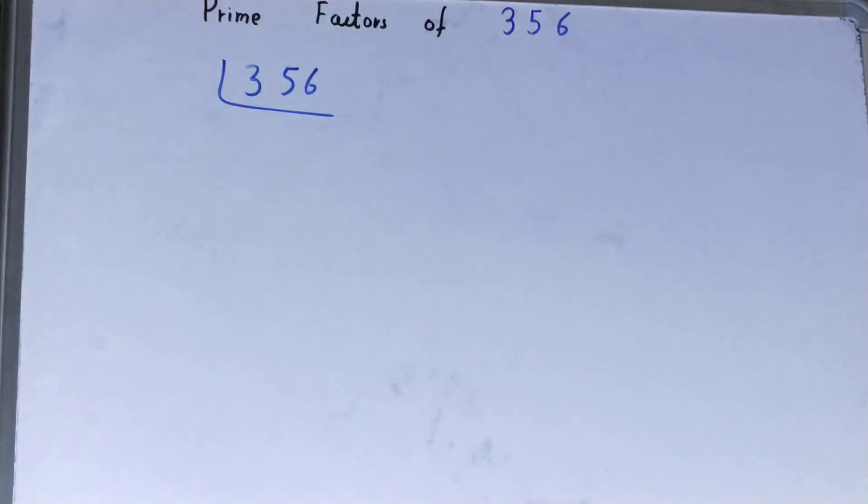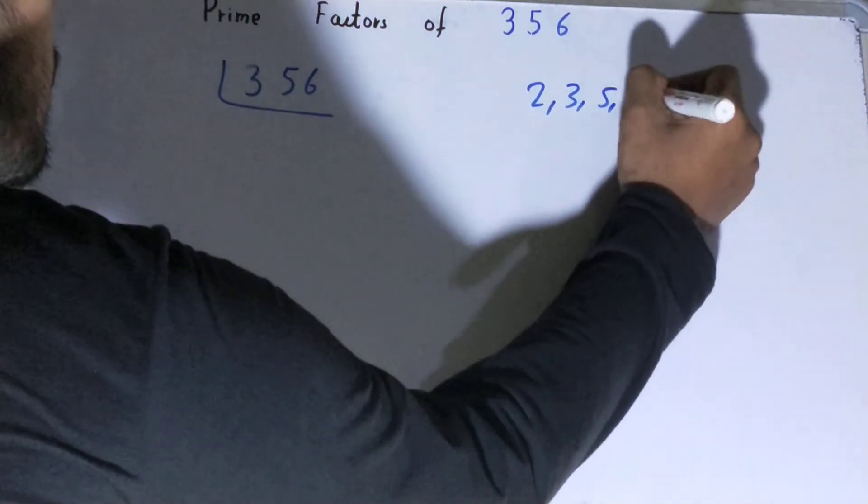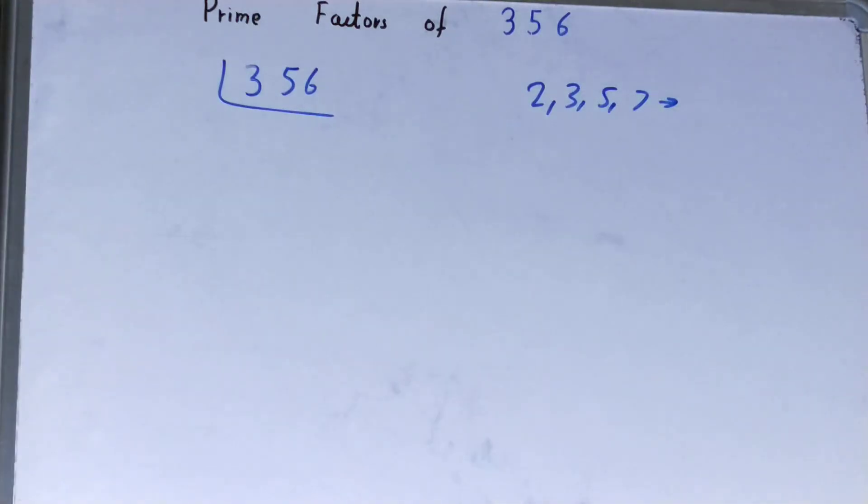Before solving this, you must have an idea about what prime numbers are. Prime numbers are numbers that are divisible by one and the number itself, like 2, 3, 5, 7, and so on.